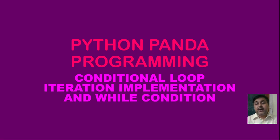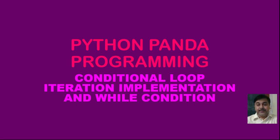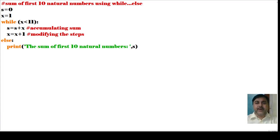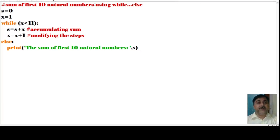Now, using the while loop, see this particular program. In this program we are finding the sum of the first 10 natural numbers using while and else. First I have taken two variables: s equals to 0, and x equals to 1. This is the initialization.